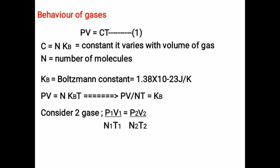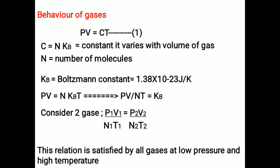Consider there are two gases. P1, V1, T1 are pressure, volume, temperature of the first gas, and P2, V2, T2 are the pressure, volume, temperature of the second gas. N1 and N2 are the number of molecules of the first and second gas. Then we can write P1V1 by N1T1 equals P2V2 by N2T2. From this equation, we can conclude this relation is satisfied by all gases at low pressure and high temperature.